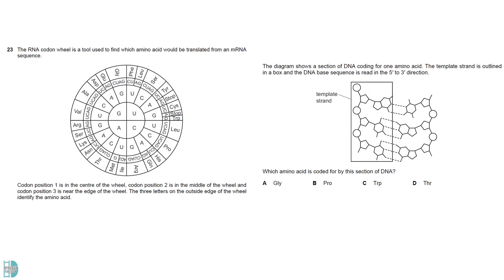The base pairs with two hydrogen bonds are A and T, and those with three are C and G. A and G are purines with two rings, while C and T are pyrimidines with one ring. So the three nucleotides in the box are A, C, and C. It will be transcribed into U, G, and G in the mRNA. It codes for tryptophan.